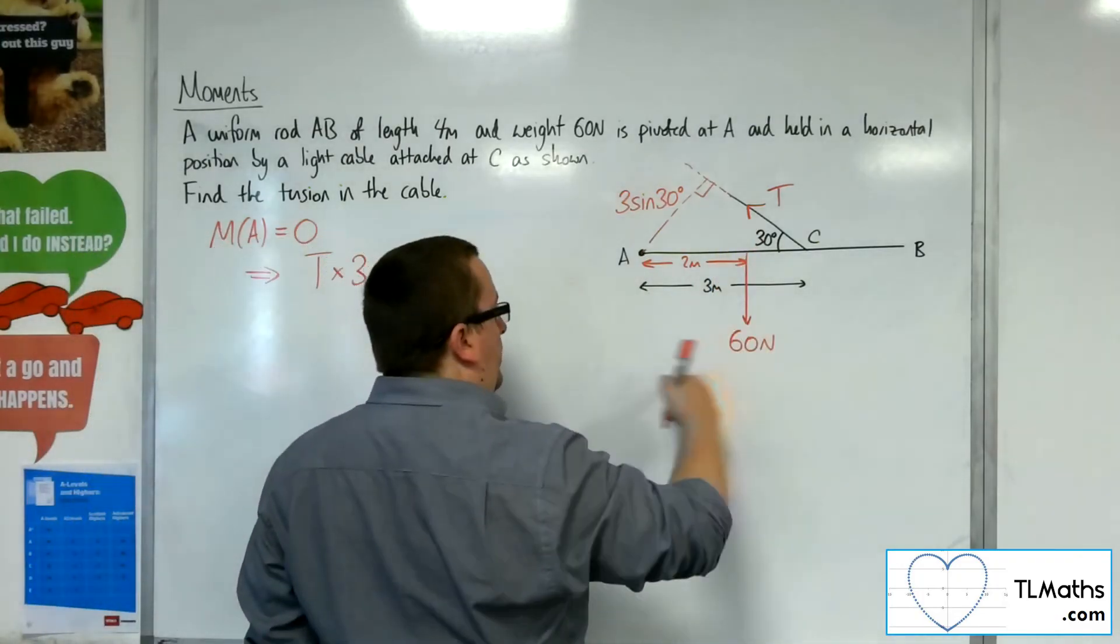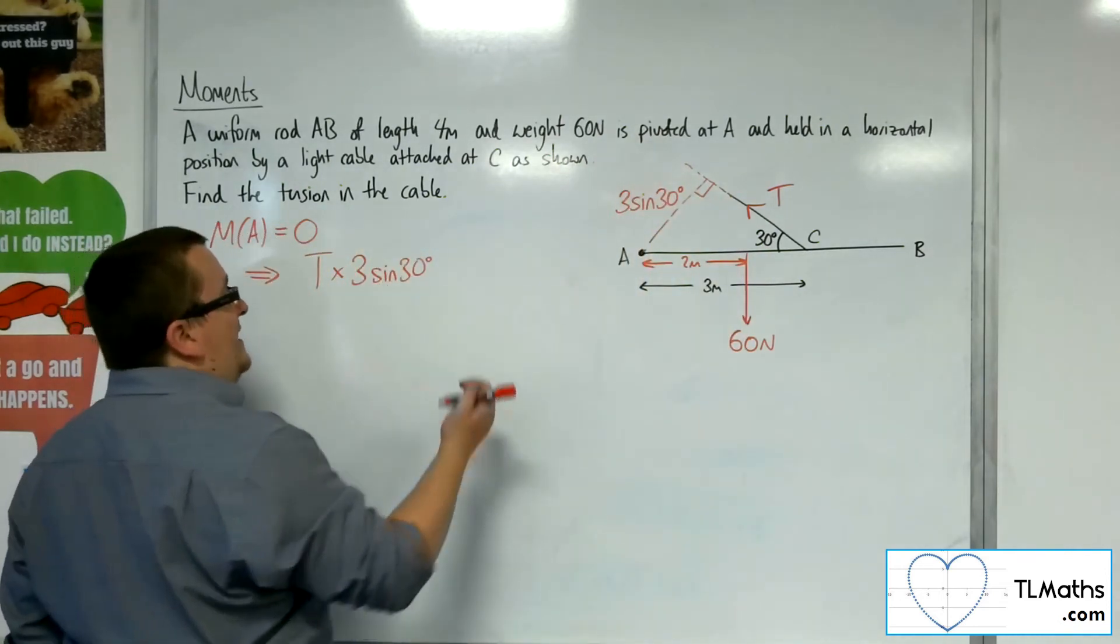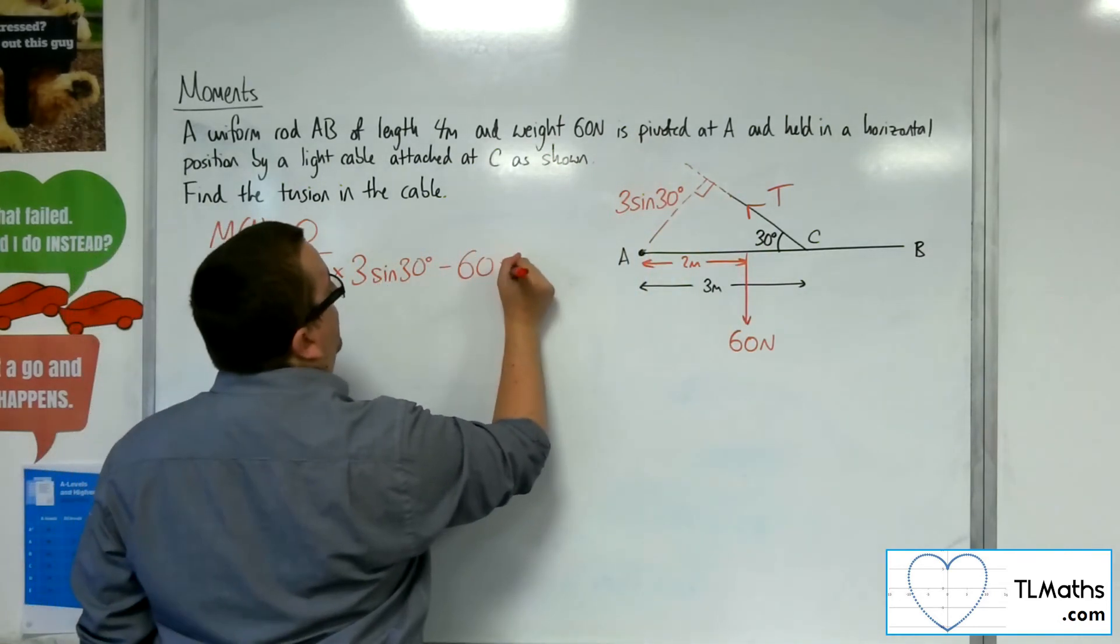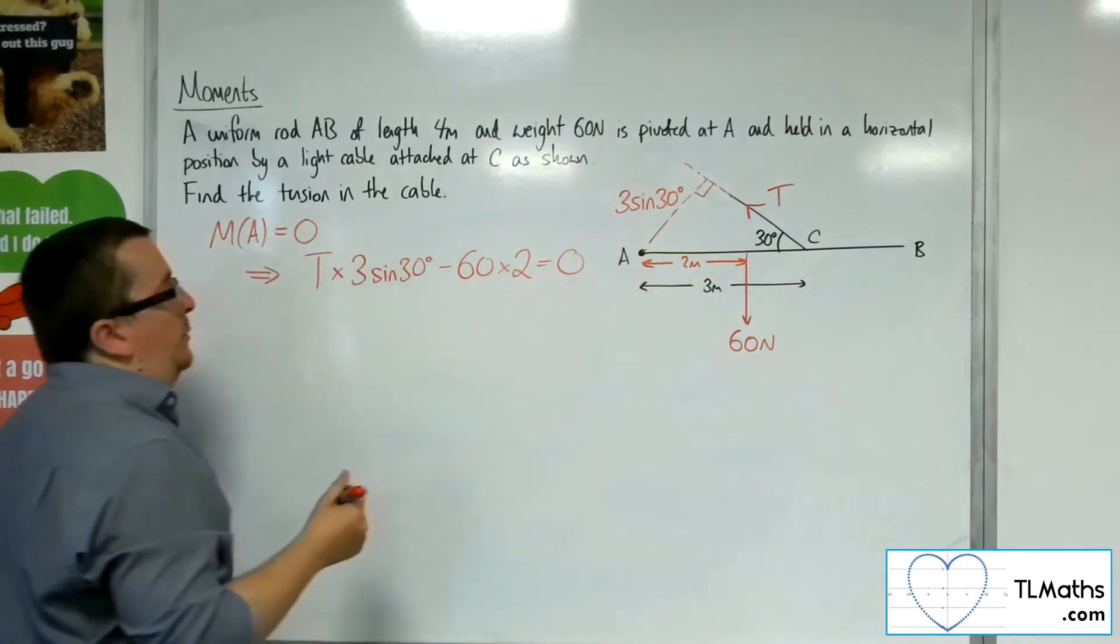I've got the 60 newtons, and that's going around in that direction, so that's clockwise, so negative. So minus 60 times its distance, which is 2 meters, is equal to 0.